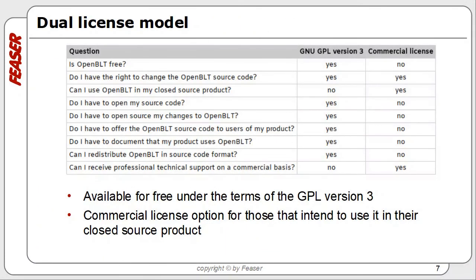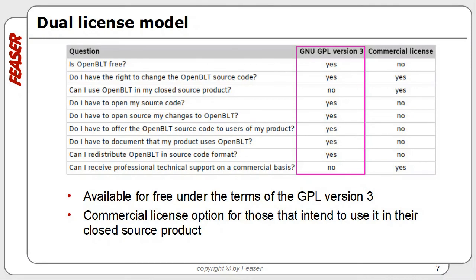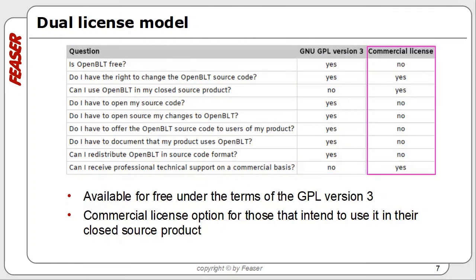OpenBLT is open source and licensed under version 3 of the GNU General Public License. OpenBLT is free under this license and can be freely used and distributed under its terms. The freedom offered by the GNU GPL comes with responsibilities and side effects that are not always desirable, especially if you want to integrate OpenBLT in your closed source product, or if you don't want your customers to know that your product contains OpenBLT. As an alternative, OpenBLT can be made available under a commercial license, making it possible to use the bootloader in your closed source product.